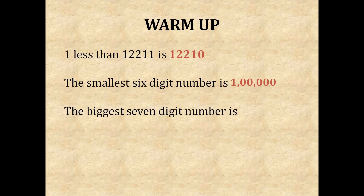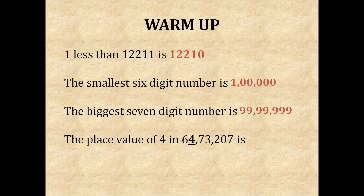The biggest 7-digit number is 99,999. The place value of 4 in this number — what is the place value? If you read this number by its place: 1, 10, 100, 1000, 10,000 and lakh. So the place value is 4 lakh. In words: 4 lakh. In numbers: 4 lakh.